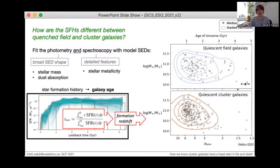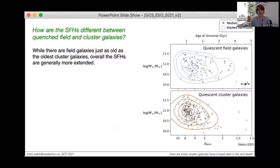Now we can compare the distributions of galaxy ages between the cluster and field populations, and there are a few interesting things to note. While there are field galaxies that are just as old as the oldest cluster galaxies, overall field galaxies have a broader distribution of ages, which is to say that the star formation histories are generally more extended. This is true mainly at larger stellar masses.